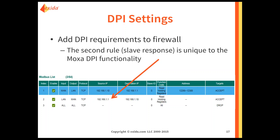The next thing we look at is the function code we want to use. Moxa knows what function code 3 is — it's read-holding registers. Now you put in the address of the registers you want to read. We said we started at 12288 for a quantity of 100. We've actually put 12288 to 12388 here — it should be 12387 to be exactly 100, but that's okay. Reading isn't really a problem. And we want to accept the traffic passing through.